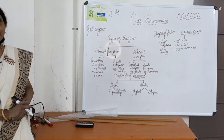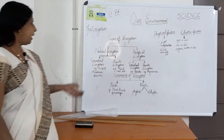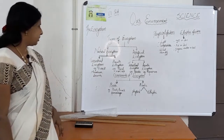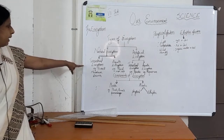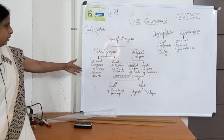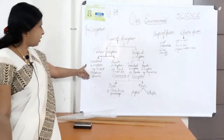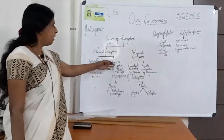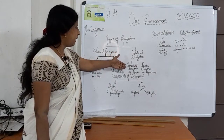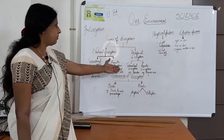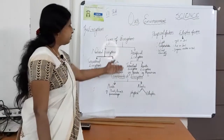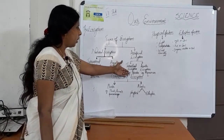Artificial ecosystem is created by human beings. It is divided into two categories: terrestrial ecosystem and aquatic ecosystem. The terrestrial ecosystem which is man-made includes, for example, a garden.